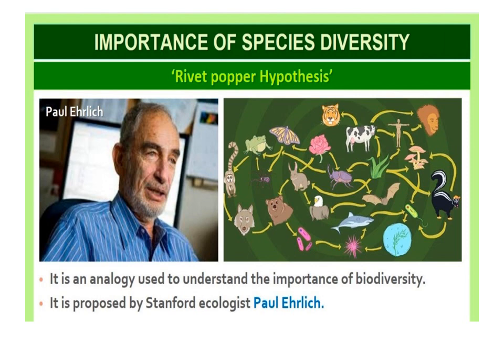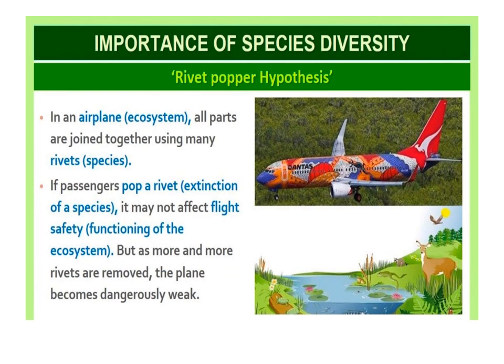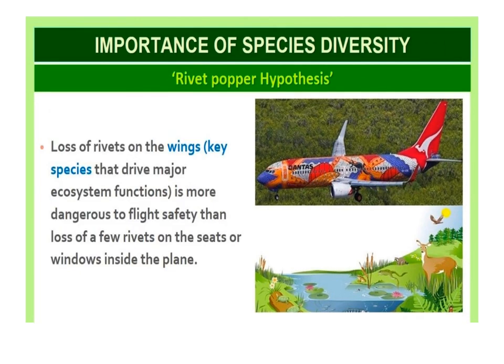The Rivet Popper Hypothesis was given by Stanford ecologist Paul Ehrlich to explain the importance of species diversity to the ecosystem. It states that if an aeroplane — equivalent to an ecosystem — has thousands of rivets equivalent to species, and passengers pop a rivet, representing the extinction of a species, it may not immediately affect flight safety or the functioning of the ecosystem. But as more and more rivets are removed, the plane becomes dangerously weak. Loss of rivets on the wings — key species that drive major ecosystem functions — is more dangerous to flight safety than loss of a few rivets on the seats and windows inside the plane. This analogy is comparable to the functioning of an ecosystem.